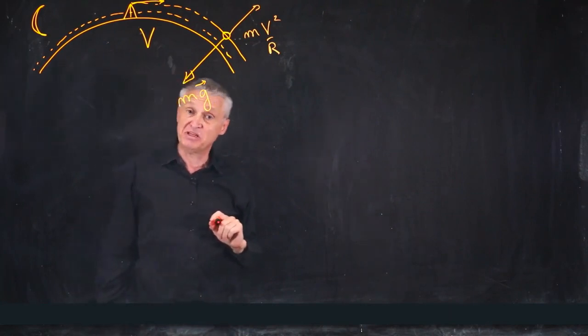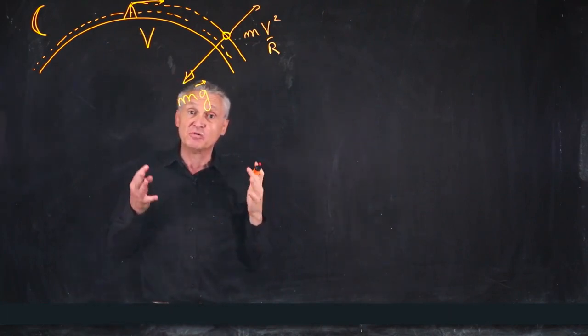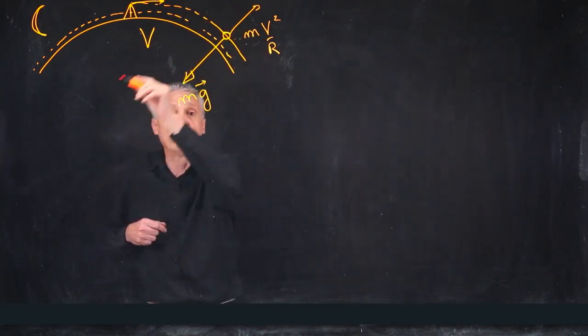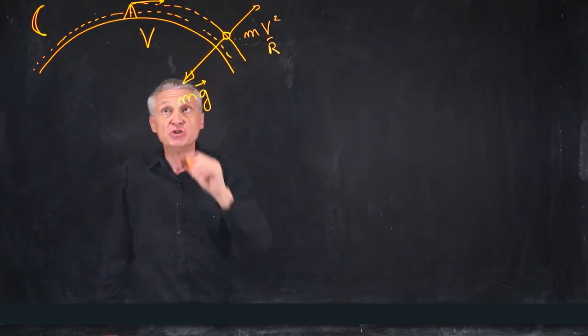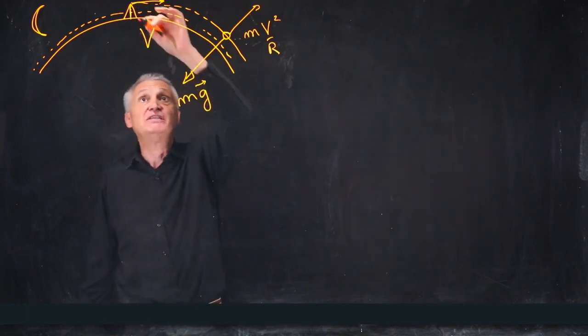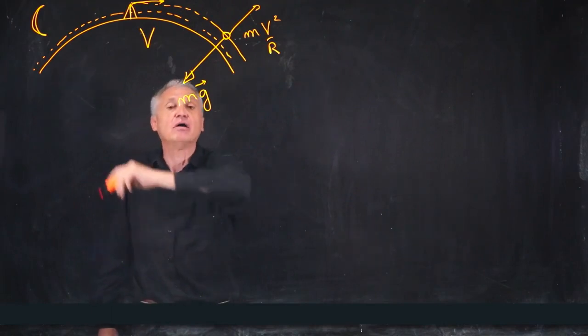And what is funny is that both forces compensate each other because we are in free flight, free fall around the Earth. You know, it's exactly the same as a free fall from the mountain, but it is a horizontal and circular free fall.